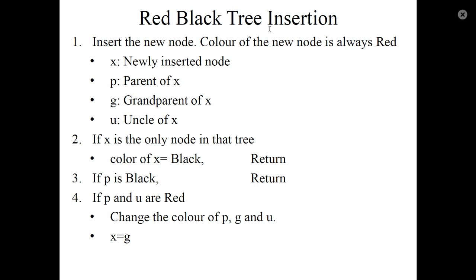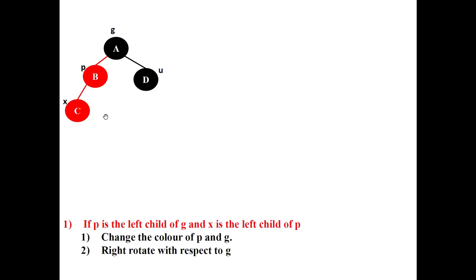Red-black tree insertion. A red-black tree is a binary search tree, so the normal binary search tree insertion procedure is followed. A new node is always inserted with the color red. X is the newly inserted node, P is its parent node, G is the grandparent, and U is the uncle of X. C is the newly inserted node; parent, grandparent, uncle, and sibling nodes are also defined.